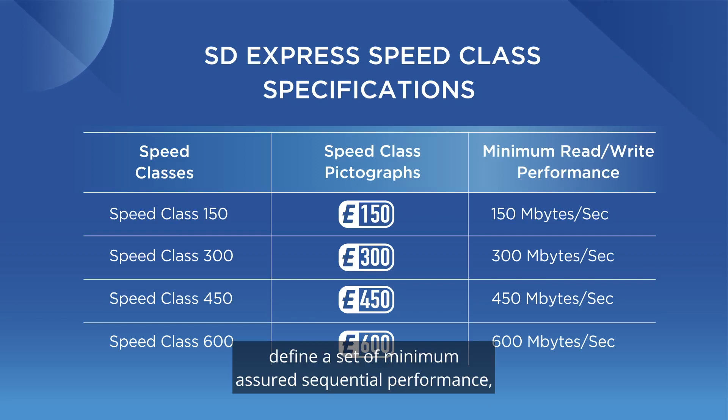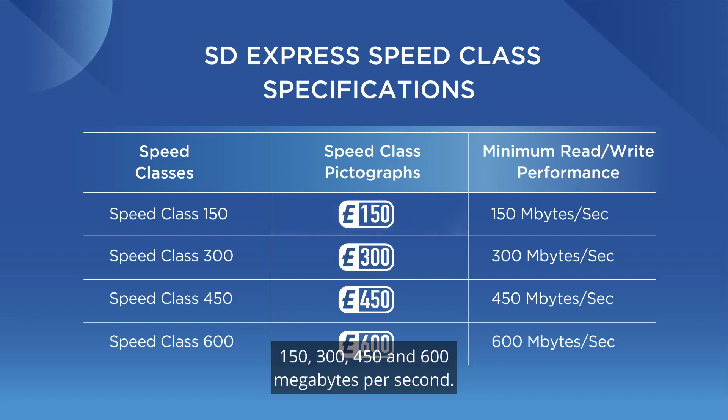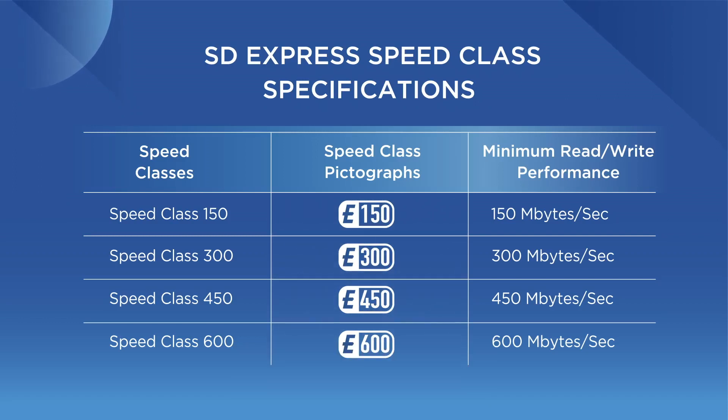The SD Express speed classes define a set of minimum assured sequential performance: 150, 300, 450, and 600 megabytes per second.